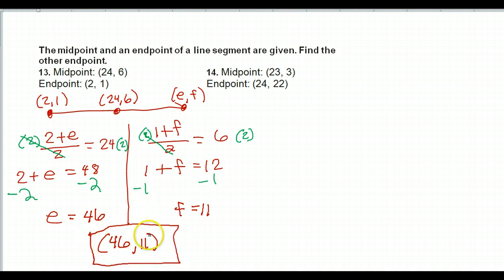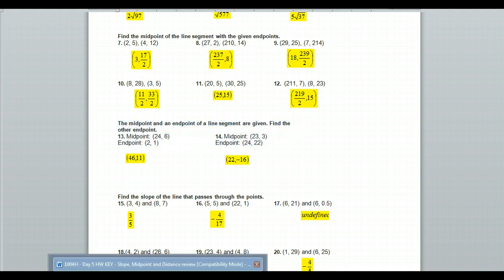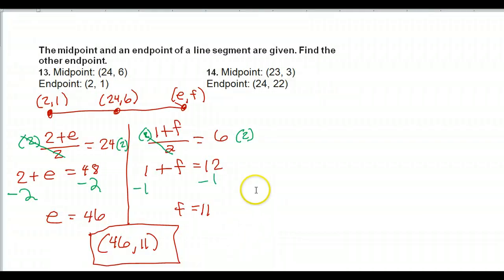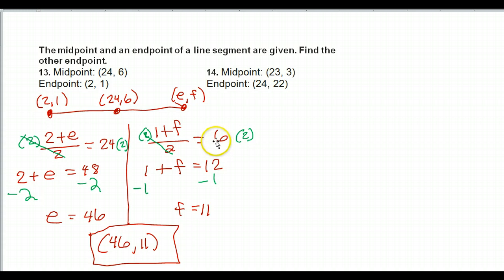Now, if I look back at the answer key for number 13, I find 46, 11. So that is the correct answer. If you're getting something else, hopefully you can find what you're doing wrong. Since number 14 is kind of the same thing, you probably made the same mistake on number 14 if you got number 13 wrong. Hopefully this will help you figure out what you did wrong on both problems. If you still have a question, let me know — send me a post.